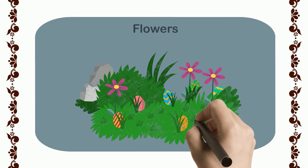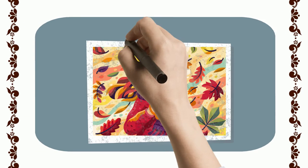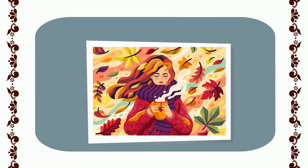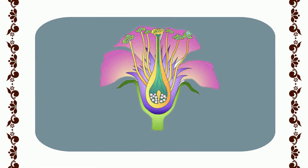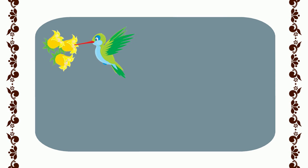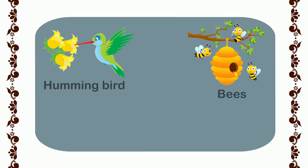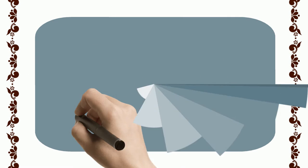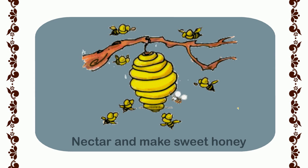Flowers are a beautiful and often colorful part of a plant. The flowers which do not have bright colors often have a beautiful fragrance. Flowers often have juice in them which is known as nectar. Birds like the hummingbird and insects like bees and butterflies feed on the nectar from the flowers. Bees process that nectar and make sweet honey, which we all love to eat.